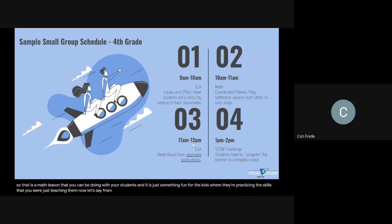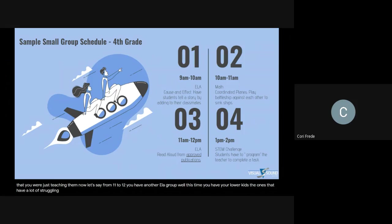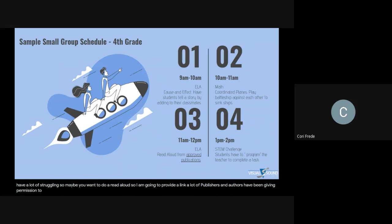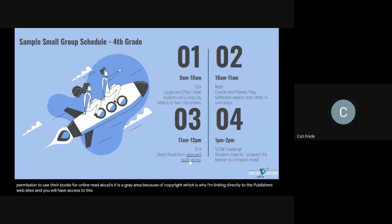From 11 to 12, you have another ELA group — this time your lower kids, the ones who are struggling. Maybe you want to do a read aloud. A lot of publishers and authors have been giving permission to use their books for online read alouds. It is a gray area because of copyright, which is why I'm linking directly to the publishers' websites. You'll be able to go to the link that says approved publications. I'm also putting that link into the resource page I've been providing to teachers.